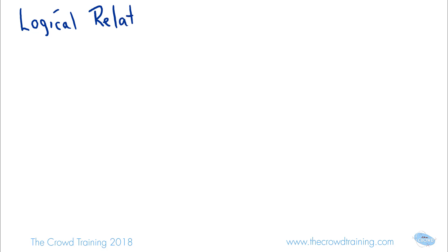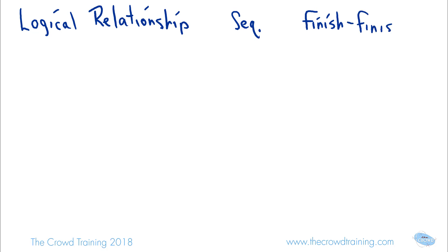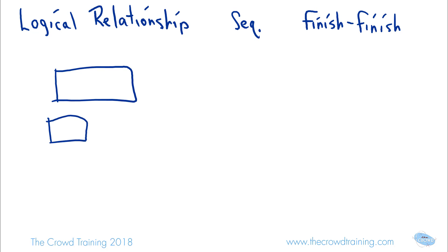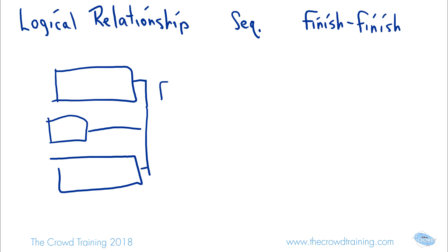In this whiteboard animation, I'm going to talk about the logical relationship type used when you're doing your activity scheduling and sequencing your various activities. This one is called Finish to Finish. The reason it's called Finish to Finish is that you want two activities — no matter how long they are — or many activities, to all finish at the same time.